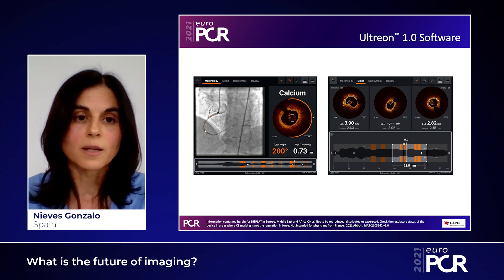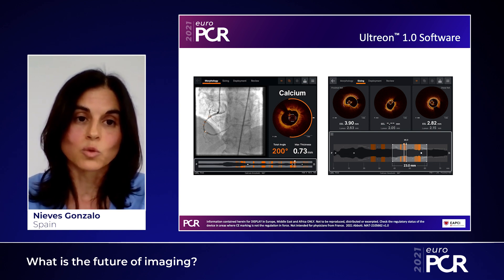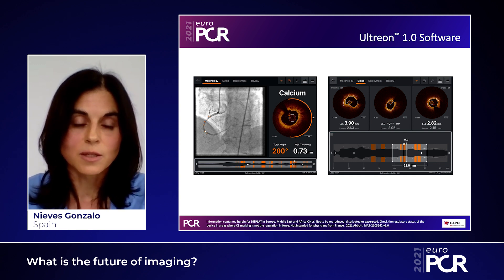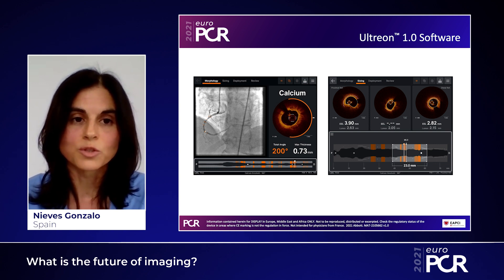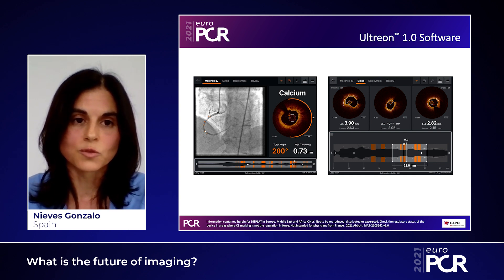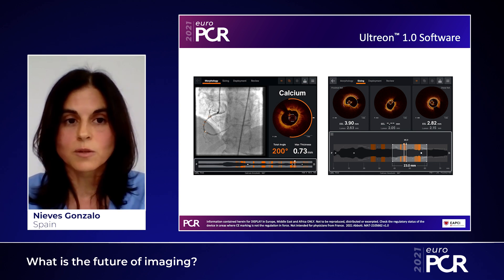EEL has been one of the topics that have been more difficult with OCT — whether it was easy or possible to assess. Having this kind of automatic detection of EEL, telling you in which regions it is visible and measurable, can be really useful in the future for the implementation of algorithms for sizing.